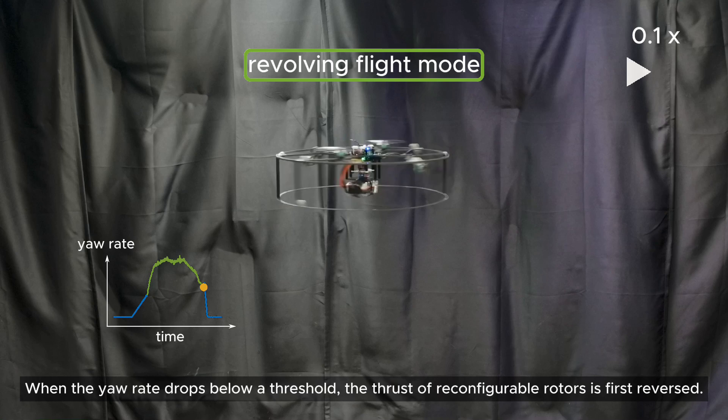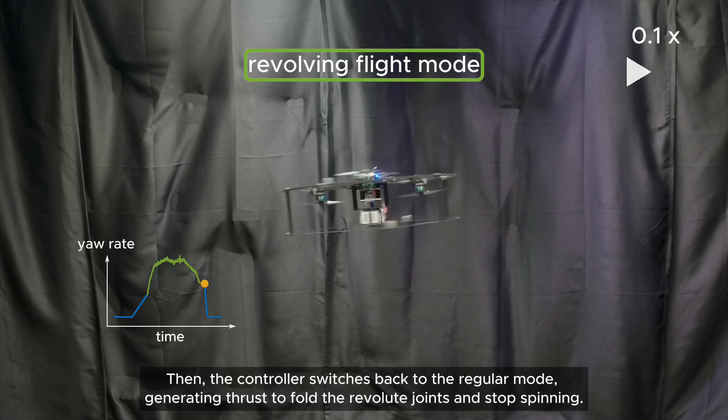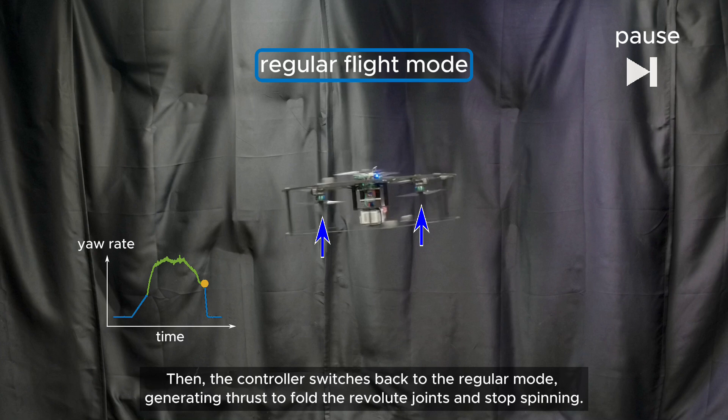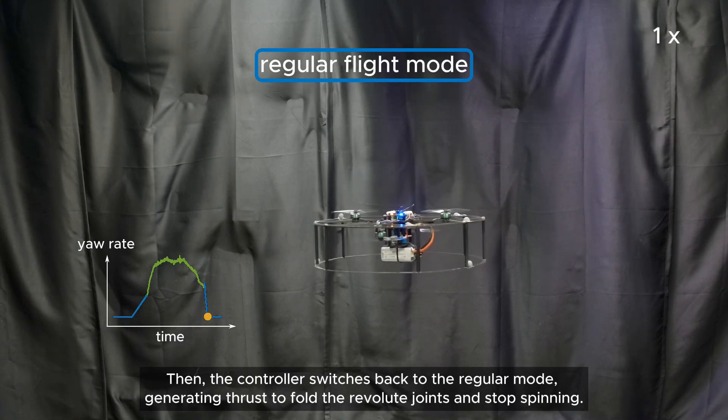When the yaw rate drops below a threshold, the thrust of reconfigurable rotors is first reversed. Then, the controller switches back to the regular mode, generating thrust to fold the revolute joints and stop spinning.